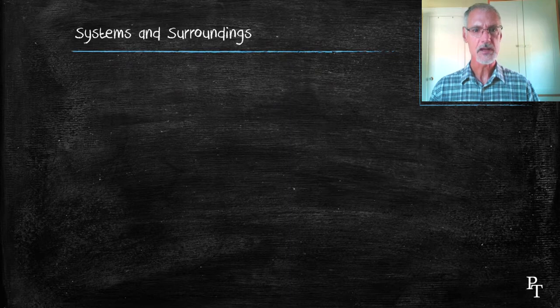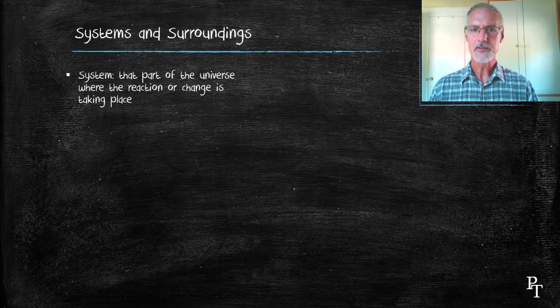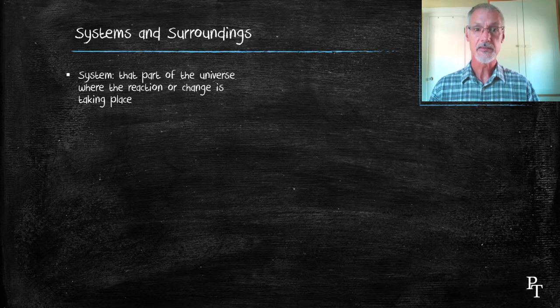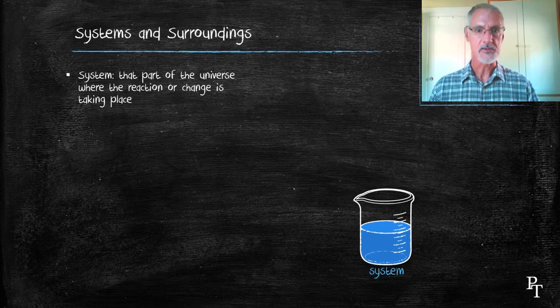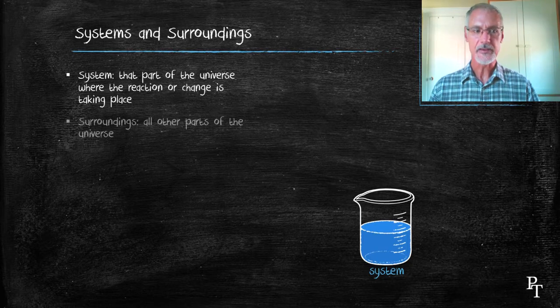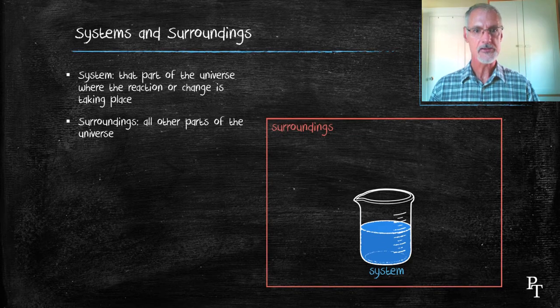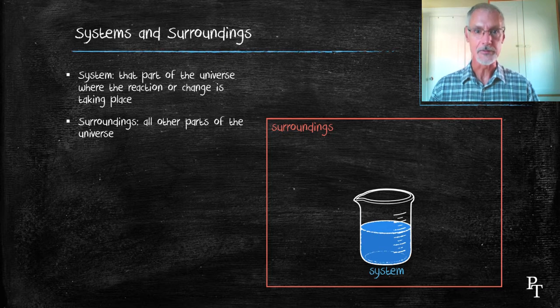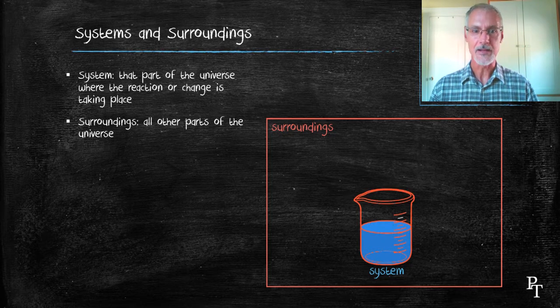First of all, a few definitions. Understanding the difference between a system and the surroundings. That part of the universe that we're studying is considered to be the system, whether that be a reaction perhaps taking place in a beaker or what's occurring around a flame. Everything else that's external to that, we call the surroundings. Put the surroundings and the system together, you have the universe. The surroundings is not only the air around the reaction, but could also be the container itself.